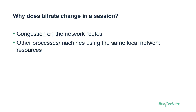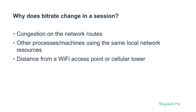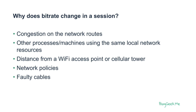Other processes or machines using the same local network resources also affect bitrate — for example, someone watching Netflix or YouTube, or using Google Drive. It might also be the distance from the Wi-Fi access point or cellular tower, or it can be network policies.